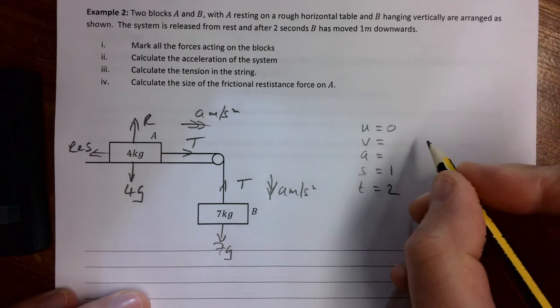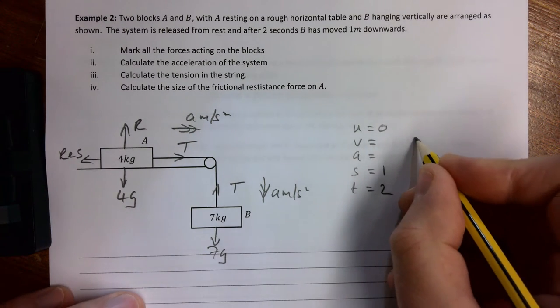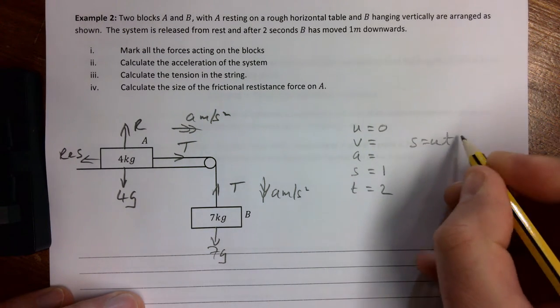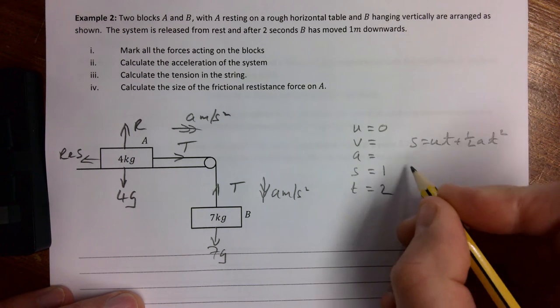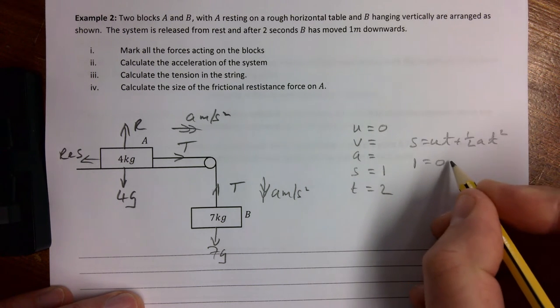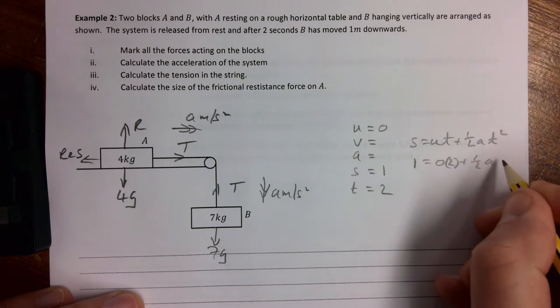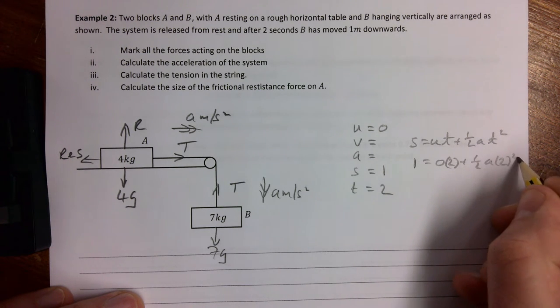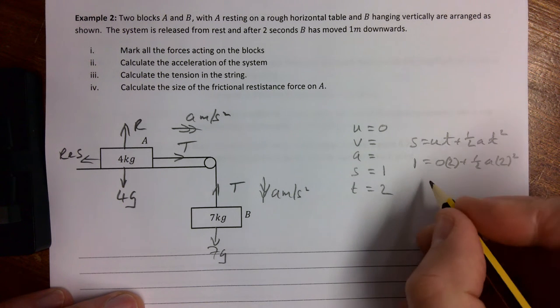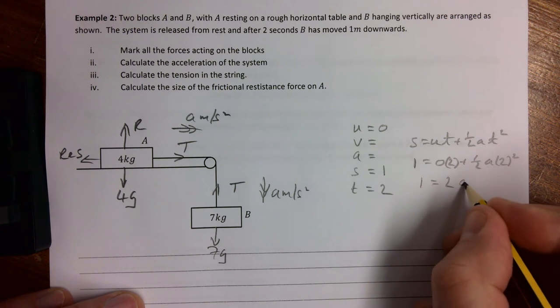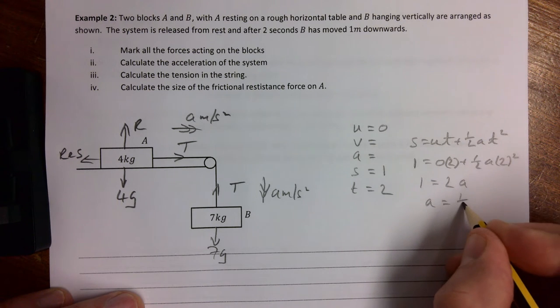We want a and we have u, s, and t, so we're going to use s equals ut plus half at squared. That means 1 equals 0 times 2 plus half a times 2 squared. Nice and straightforward how this works out. We just get 1 equals 2a and we get a is a half meters per second squared.